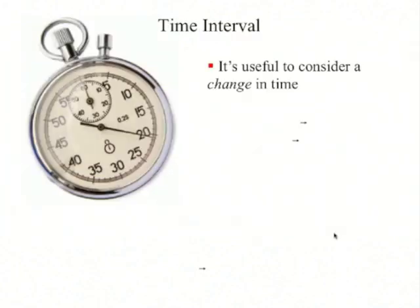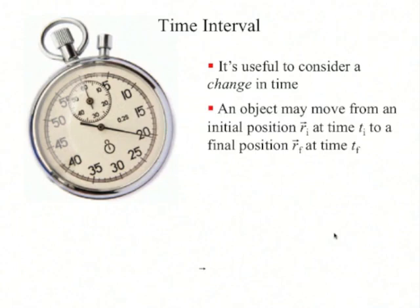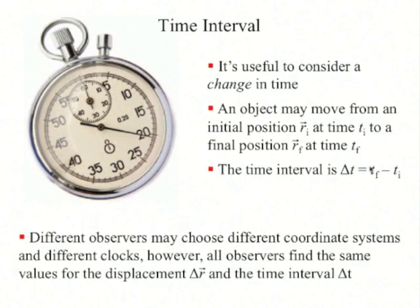Just as we consider a change in position, it's useful to consider a change in time. If an object moves from initial position r_i at time t_i to a final position r_f at time t_f, you can define the time interval as delta t equals t_f minus t_i. Different observers might choose different coordinate systems and starting times, however all observers find the same values for the displacement delta r and the time interval delta t.